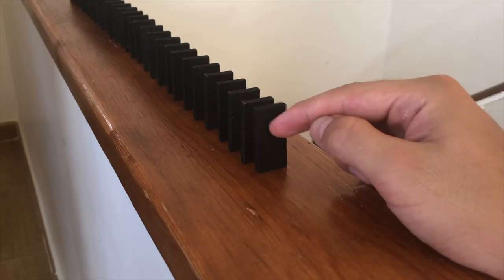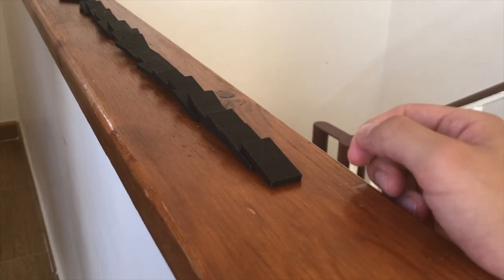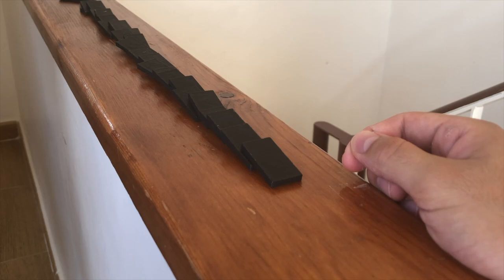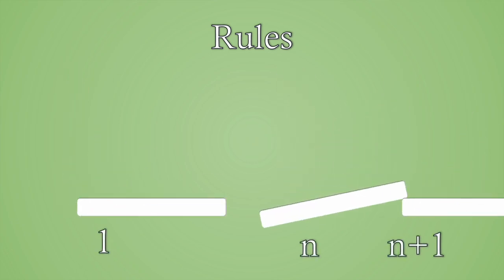When we push the first domino in our row, we expect that all the rest will fall. But we can't wait till infinite dominoes fall, so we need a faster way to prove it. For that, we set the basic rules of our domino row. The first piece will fall, and if the nth falls, it will push the successor domino. To prove that every domino will fall, we label the pieces with natural numbers, and consider two sets.